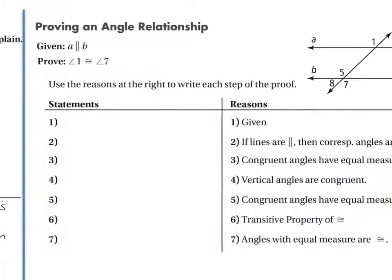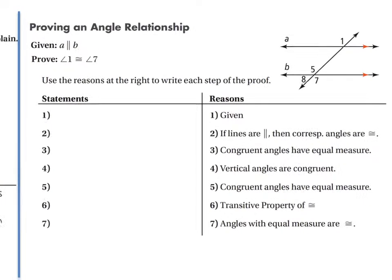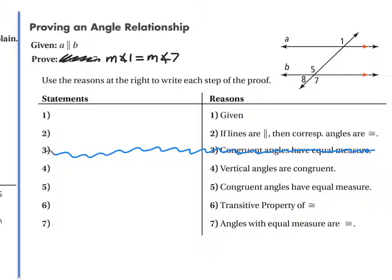Let's take a look at the proof right next to it. In this one, I actually don't like how they did this proof. I want to change a couple things before we work this together. Please copy this down in your notes. We are not proving that angle 1 is congruent to angle 7 — I want to prove that the measure of angle 1 equals the measure of angle 7. Also, statement and reason 3 are gone, and statement and reason 5 are gone. They're just extra statements we don't need.